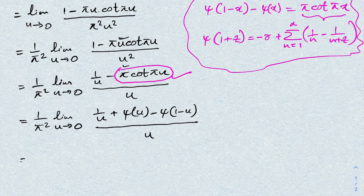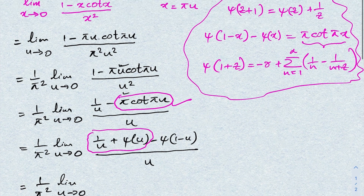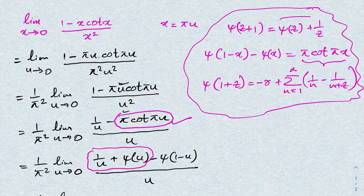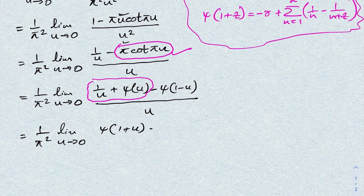An interesting observation: 1/u + ψ(u) equals ψ(1+u) by the recurrence relation. So we can write ψ(1+u) in place of (1/u + ψ(u)), giving (1/π²) times the limit as u→0 of (ψ(1+u) minus ψ(1−u)) over u.